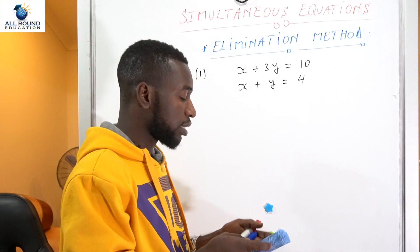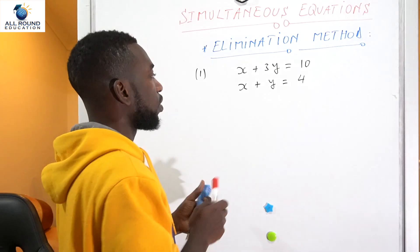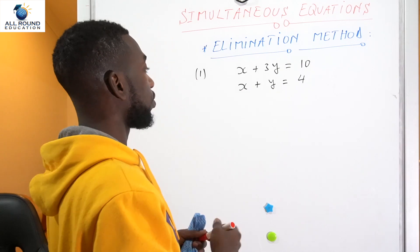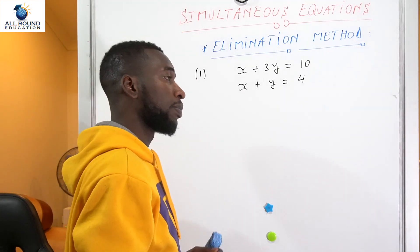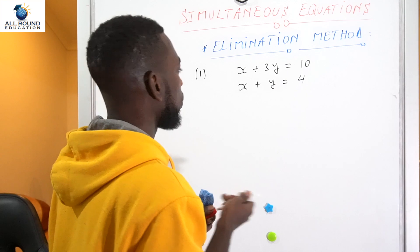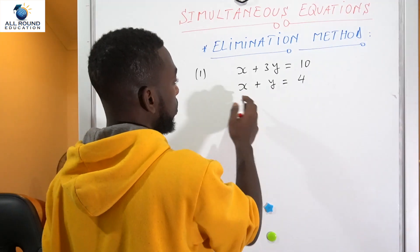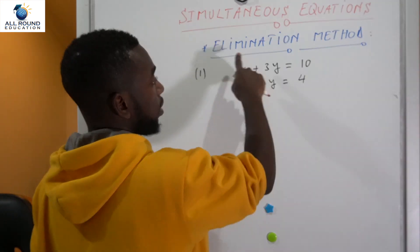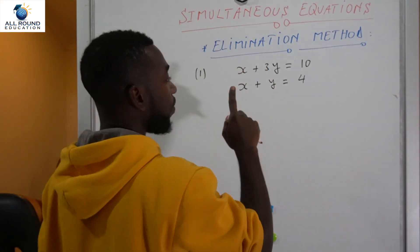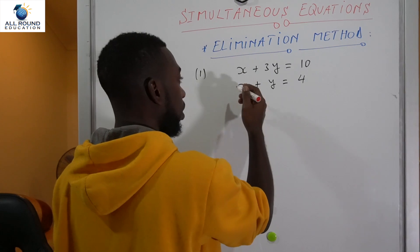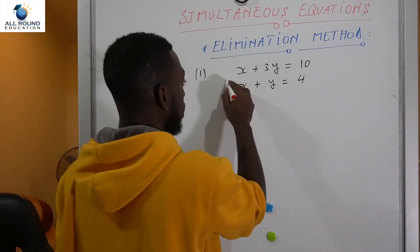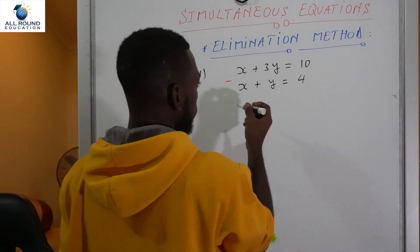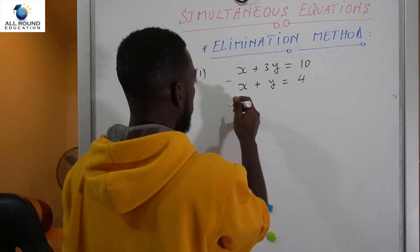Let's get started. For this first example we've got x plus 3y equals 10, and the other equation is x plus y equals 4. To solve this, you can see we have x and x in both equations. Since we are eliminating one of the variables, we could just subtract — we subtract the second equation from the first one.